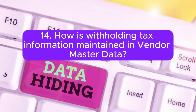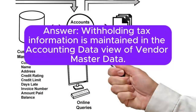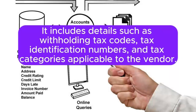14. How is withholding tax information maintained in Vendor Master Data? Answer: Withholding tax information is maintained in the accounting data view of Vendor Master Data. It includes details such as withholding tax codes, tax identification numbers, and tax categories applicable to the vendor.